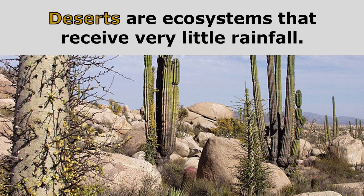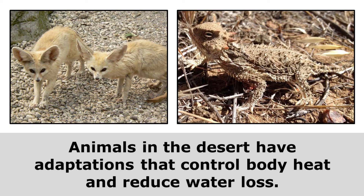Deserts are ecosystems that receive very little rainfall. Animals in the desert have adaptations that control body heat and reduce water loss. The large ears on these fennec foxes actually help them give off heat.